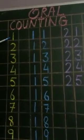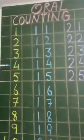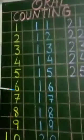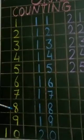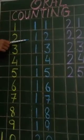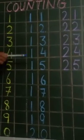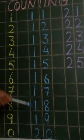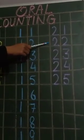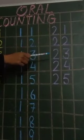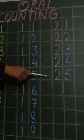Let's do it once again. You all speak after me, okay? 1, 2, 3, 4, 5, 6, 7, 8, 9, 10, 11, 12, 13, 14, 15, 16, 17, 18, 19, 20. 21, 22, 23, 24, 25, okay?